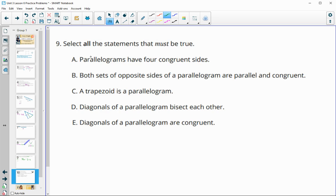Number nine, select all statements that must be true. Parallelograms have to have four congruent sides. That is false. We could draw a parallelogram that does not have four congruent sides. Both sets of opposite sides of a parallelogram are parallel and congruent. That's true. So top and bottom are going to be parallel and congruent to each other. Left and right are as well. This is definitely true. A trapezoid has to be a parallelogram. That is false. So here's a drawing of a trapezoid that is clearly not a parallelogram. The diagonals of a parallelogram bisect each other. That is true. That happens for every parallelogram. And the diagonals of a parallelogram are congruent. That does not have to be true. It is true in a rectangle, but it does not have to be true in a parallelogram. So this one is shorter than that one. So that is not true in all cases.